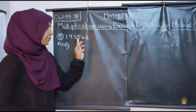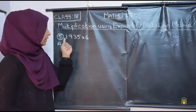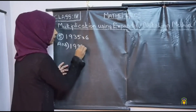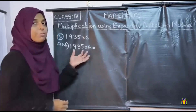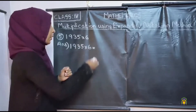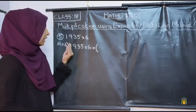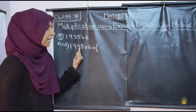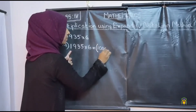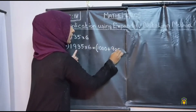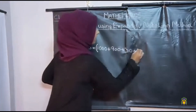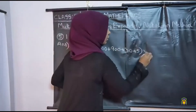We can do one more problem: 1,935 into 6. Here 1,935 is a 4-digit number and 6 is a 1-digit number. The first step is we want to write 1,935 in its expanded notation. Here 1 is in the thousands place, 9 is in the hundreds place, 3 is in the tens place, and 5 is in the ones place. So the expanded notation is 1,000 plus 900 plus 30 plus 5, into 6.